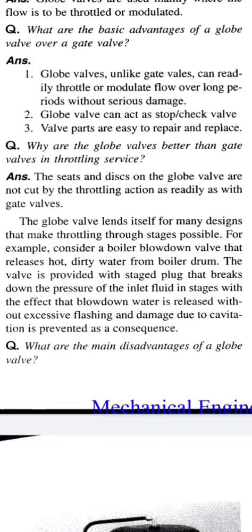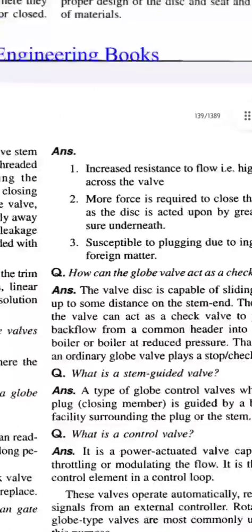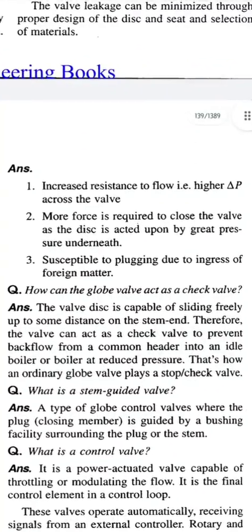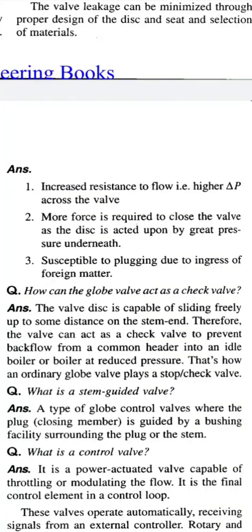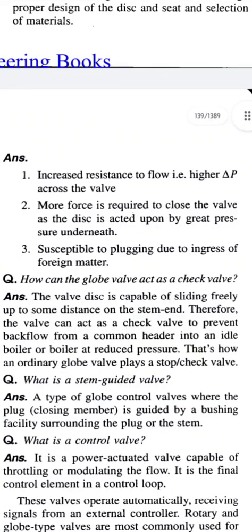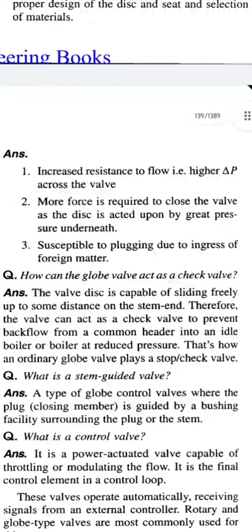What are the main disadvantages of a globe valve? Answer: 1. Increased resistance to flow means higher delta P across the valve. 2. More force is required to close the valve, as the disc is acted upon by great pressure underneath. 3. Susceptible to plugging due to ingress of foreign matter.